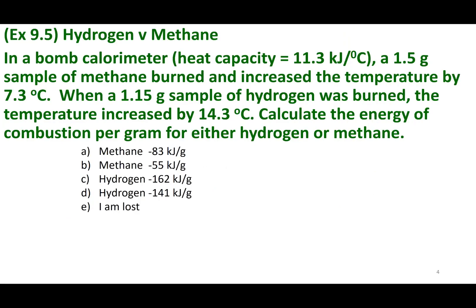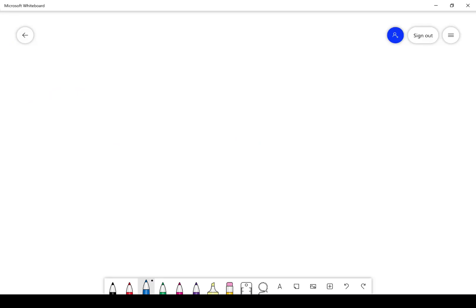Let's practice with example 9.5. Say you're a fuel scientist and you want to see how energetic burning hydrogen is versus methane. We're doing this in a bomb calorimeter. Calculate the energy of burning each substance per gram of material.